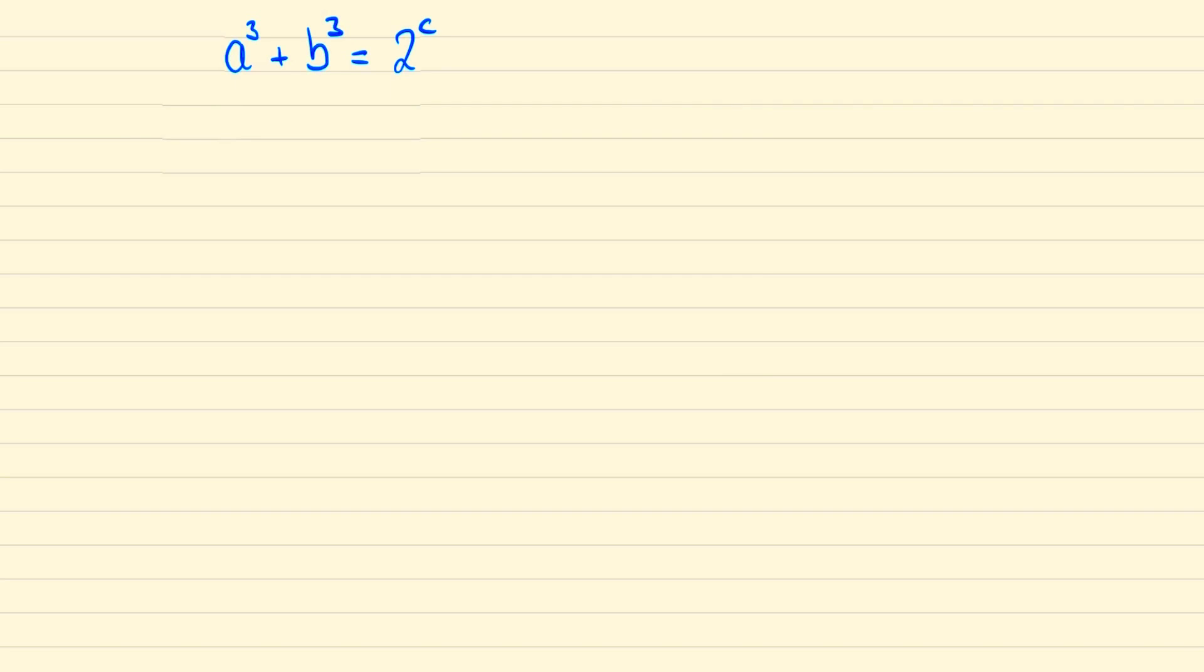If we start by assuming they are both even and sub these into our original equation, then we show 8d³ + 8e³ = 2^c, and so dividing by 8, d³ + e³ = 2^(c-3), and since this is of the form 2^f...